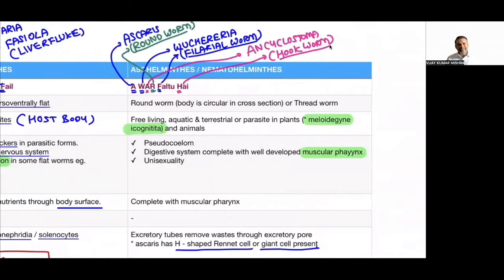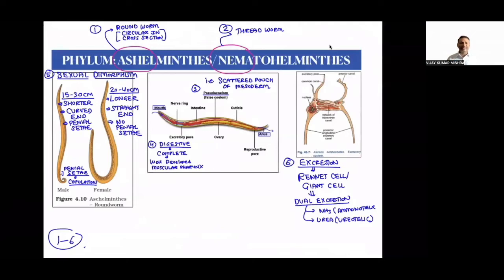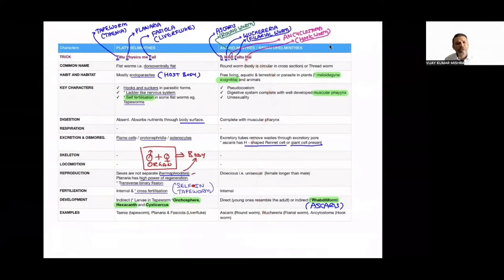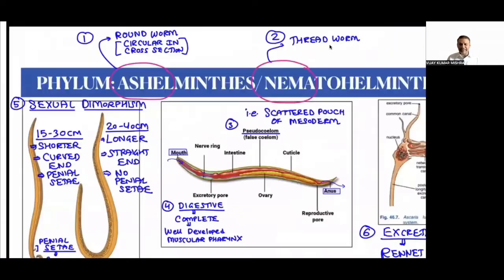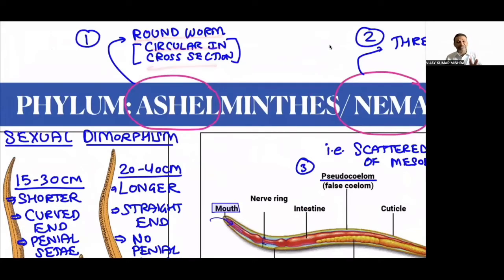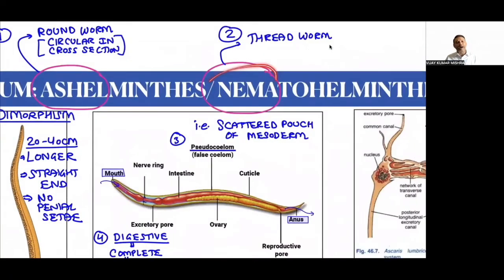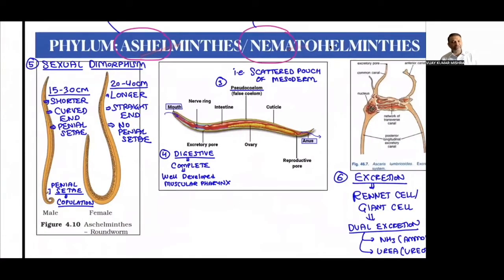Now let's discuss Aschelminthes. 'Ascel' means round — it is called roundworm because it is circular in cross-section (NCRT first line). It is also called Nematohelminthes because 'nema' means thread — some organisms are thread-like, hence thread worm; some are round, hence roundworm. These are two different names given to this phylum.